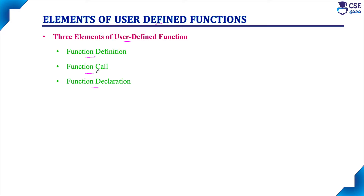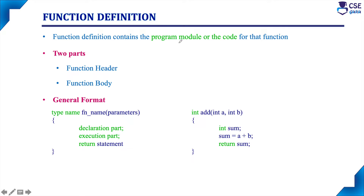These three elements are nothing but the building blocks of user-defined functions. In this session, we will first discuss the function definition. This function definition contains the program module or the code for that complete user-defined function. There are two parts in a function definition: one is the function header and another is the function body.